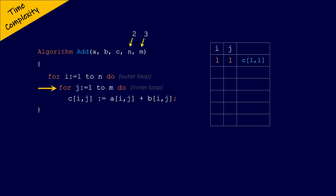Then we move back to the inner for loop. The inner for loop must complete its execution before the next iteration of the outer for loop is performed. The value of I for the outer for loop is still 1. J is incremented to 2. The condition 2 ≤ 3 is true, so the statement executes: it computes the sum at index I=1, J=2 of matrices A and B and assigns the result to index I=1, J=2 of matrix C.